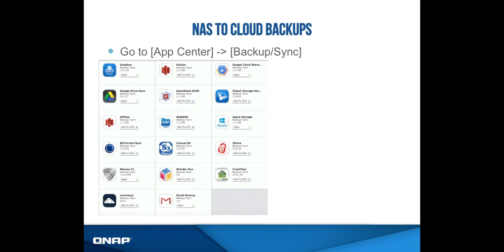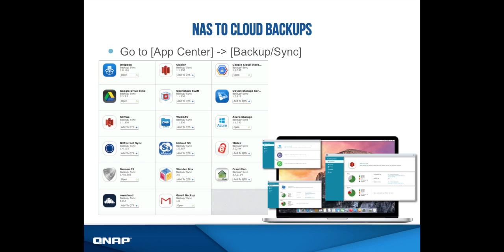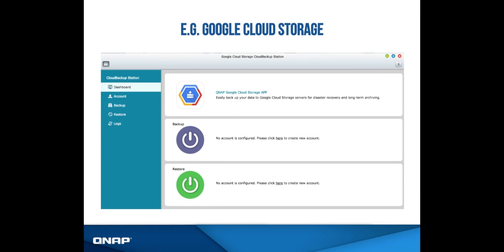How do you do that? Under QTS, instead of the Backup Station, you go to the App Center. Under the App Center on the left-hand side, there's a backup-sync category. When you click on it, you will see all the apps listed. After you decide which ones you want to use or already have a plan with, you can add them to QTS. The installed app will appear on your QTS homepage. After finishing installation, you go into the app, set up your cloud storage credentials — for example, Google Cloud storage — and start backing up the files on the NAS to your cloud account. This applies to all the cloud services QNAP supports.